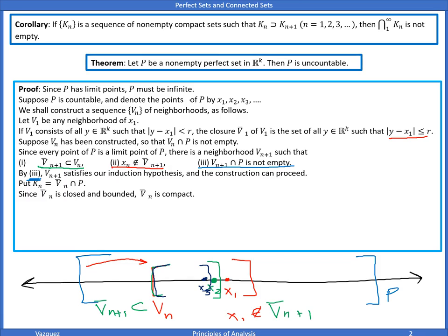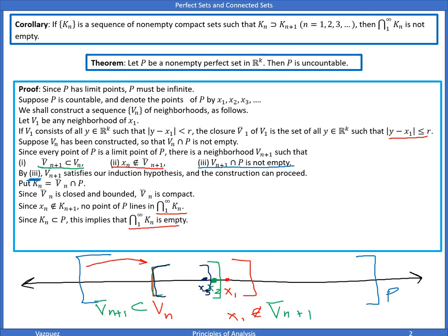Since the closure of V_n is closed and bounded, by the Heine-Borel theorem, the closure of V_n is compact. Since X_n is not in the next neighborhood — we're excluding the next point each time — no point of P lies in the infinite intersection. So this implies that the intersection of all K_n is empty.